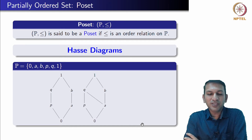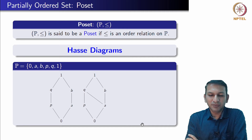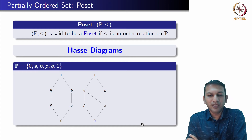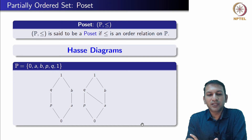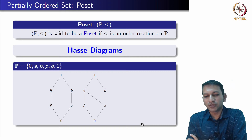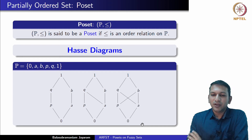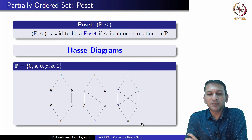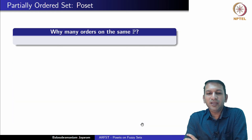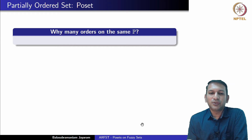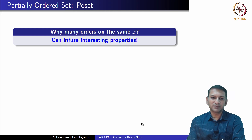We could also have another ordering which gives a different Hasse diagram. By transitivity, once you indicate these relationships, we can determine the relations between any other two elements. For instance, in both of these posets, we know that 0 is related to q, 0 is also related to b, 1 is related to every element, and 0 is also related to every element. Clearly, in both posets, q is not related to b.